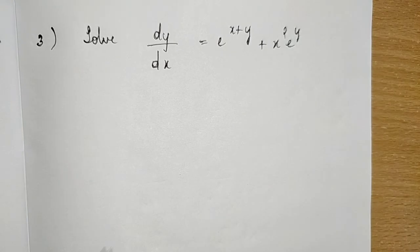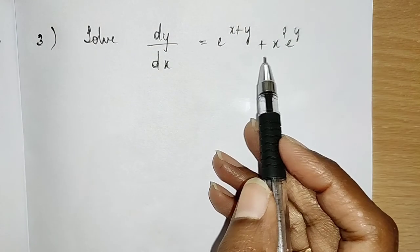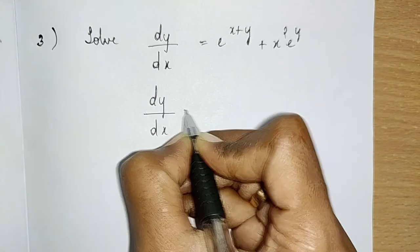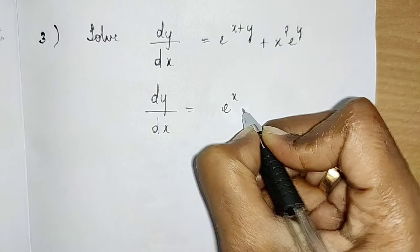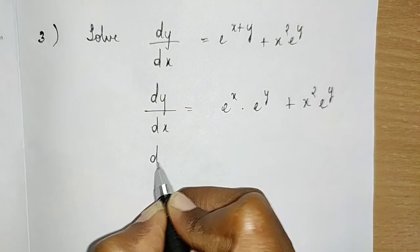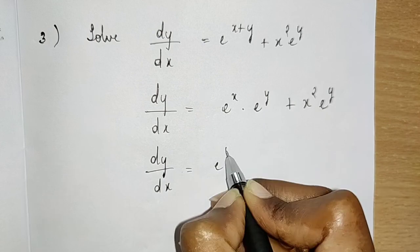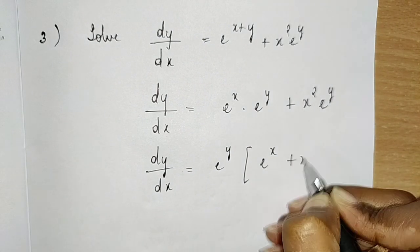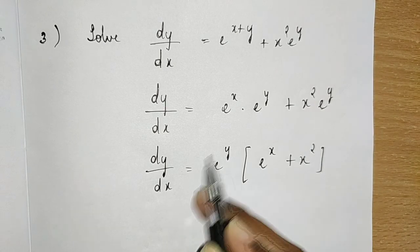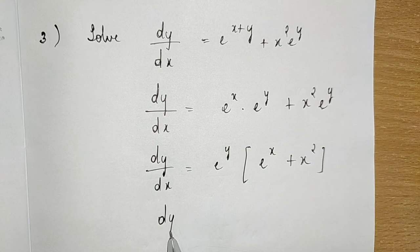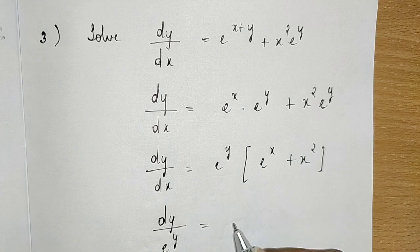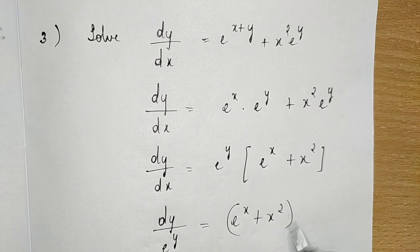Next question: solve dy/dx = e^(x+y) + x²·e^y. We write e^(x+y) = e^x·e^y, so dy/dx = e^y(e^x + x²). Taking e^y common, separating variables: dy/e^y = (e^x + x²) dx.